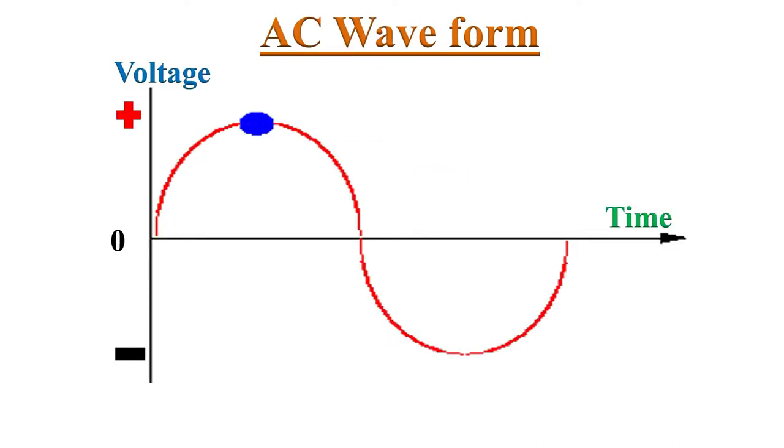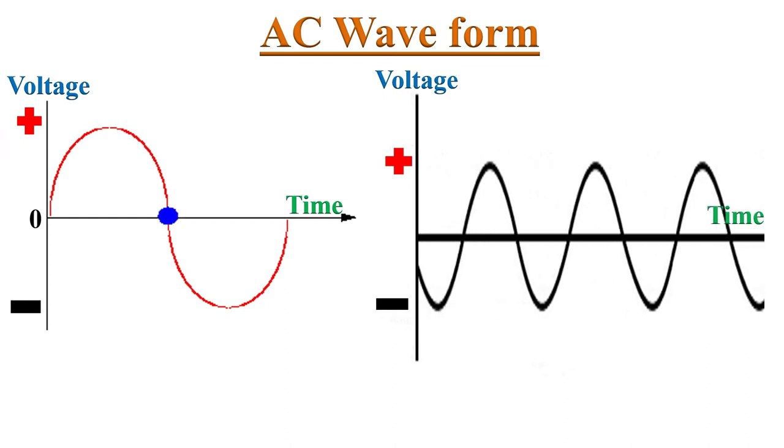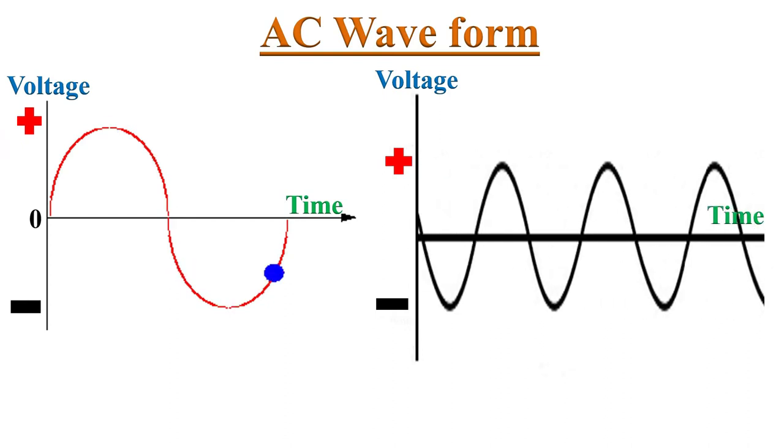The usual waveform of alternating current is a sine wave. Flow of electric charge starts from zero, grows to maximum, decreases to zero, then reverses and reaches to maximum in the opposite direction, returns again to the original value. The same process repeated again and again indefinitely.